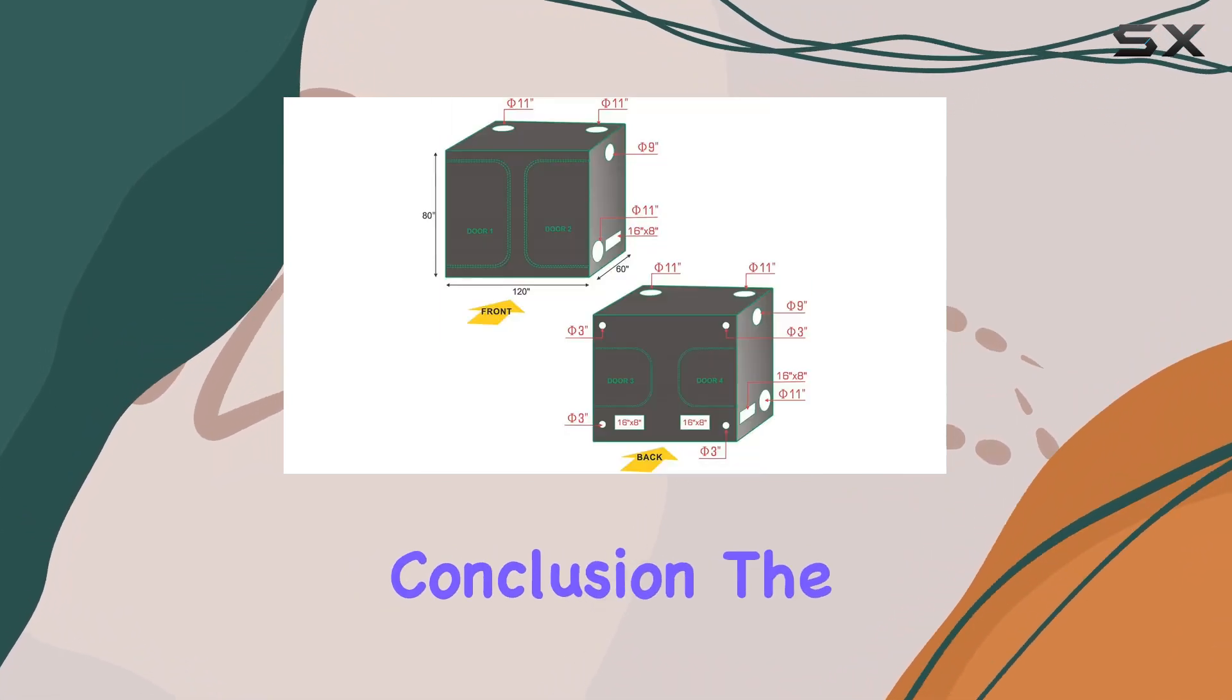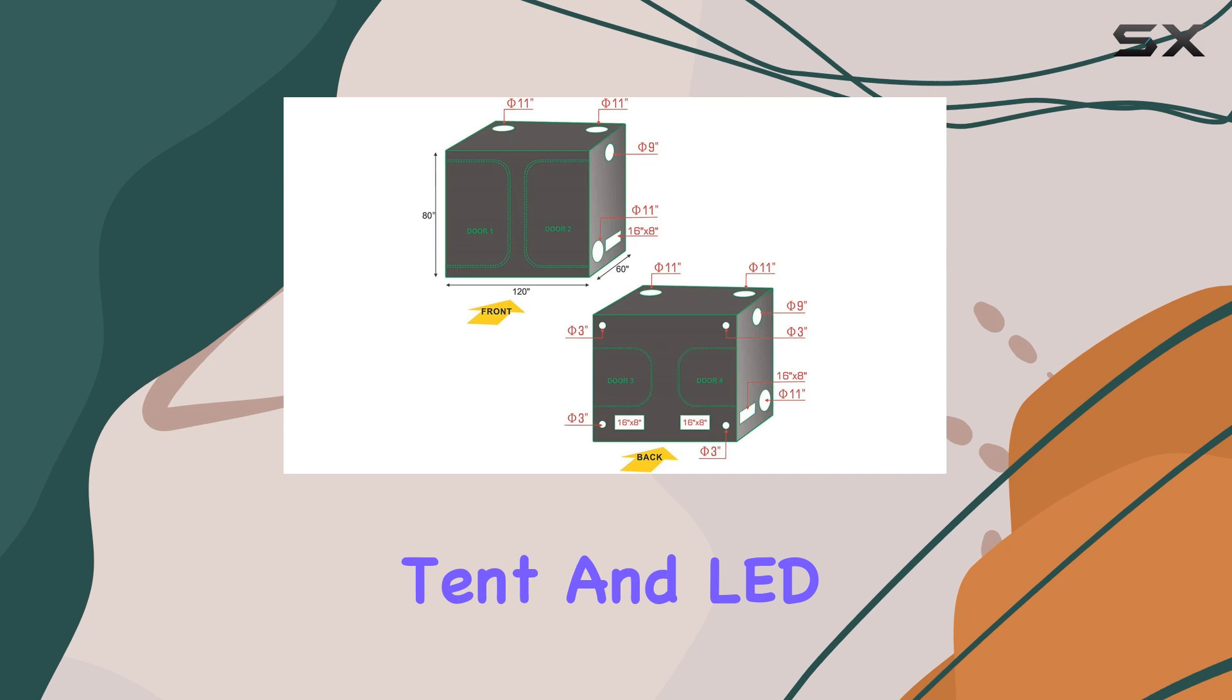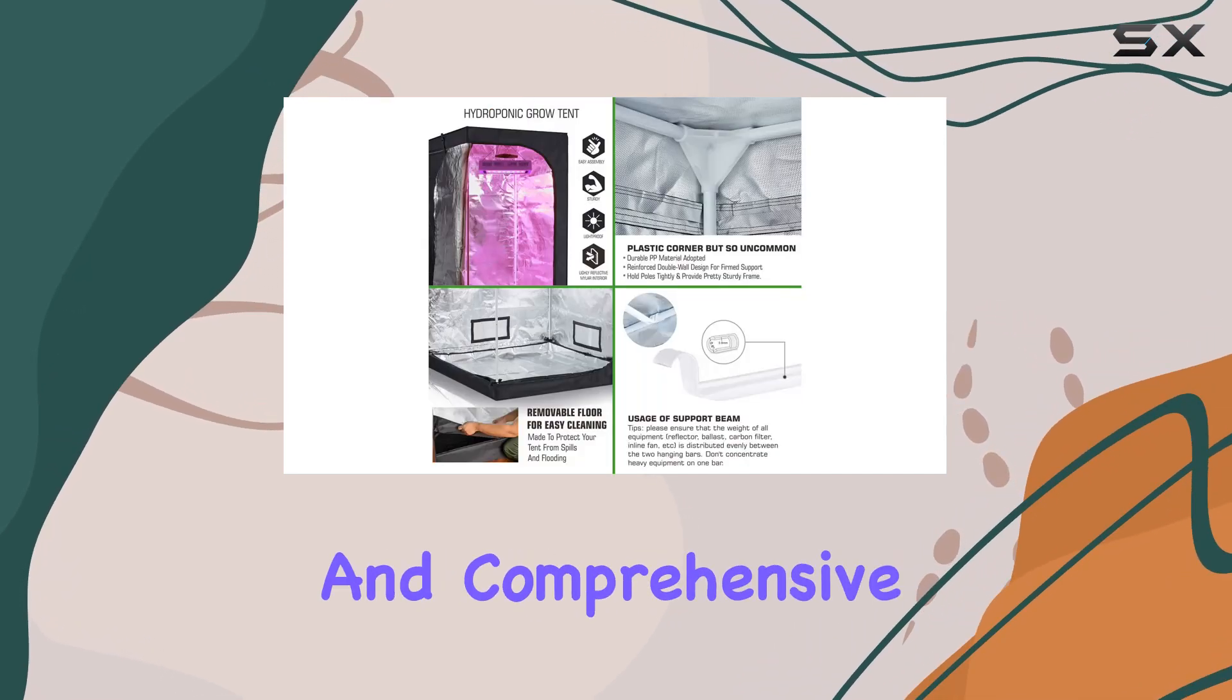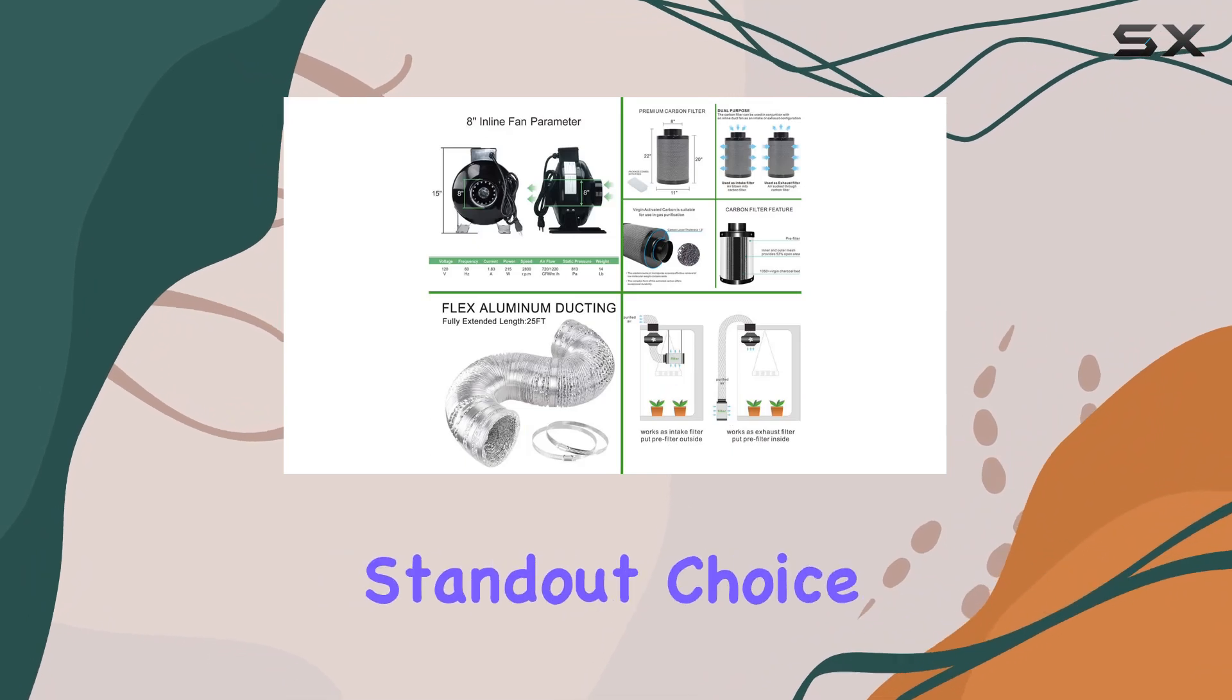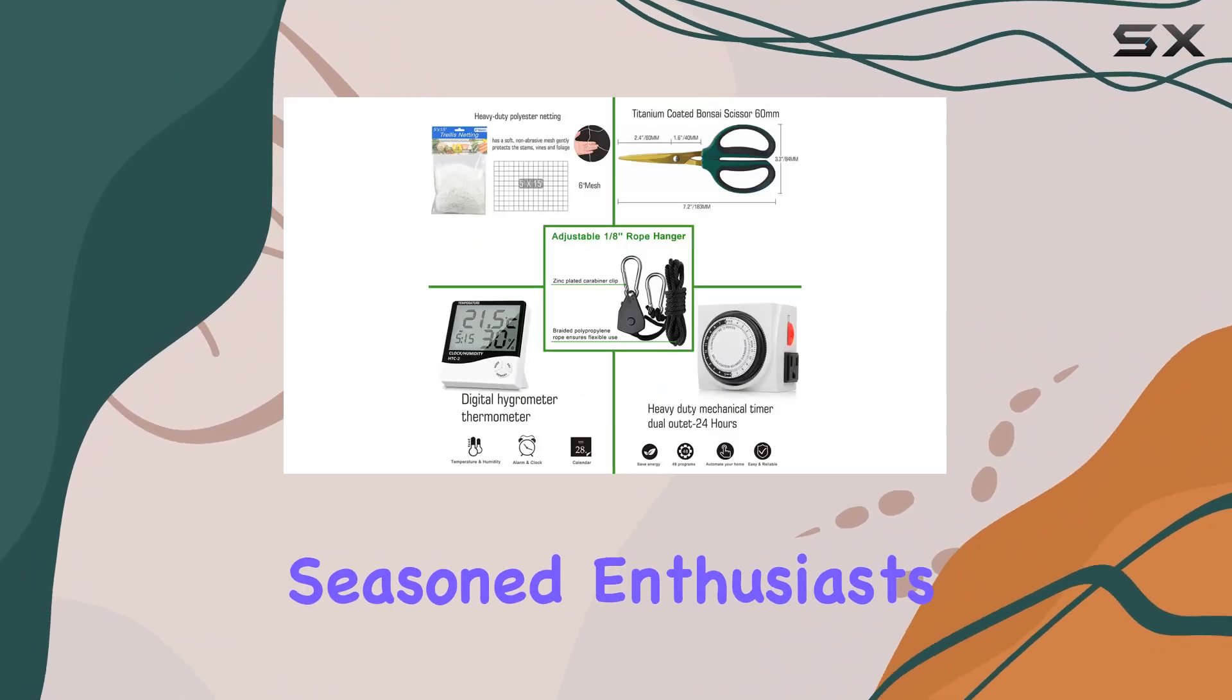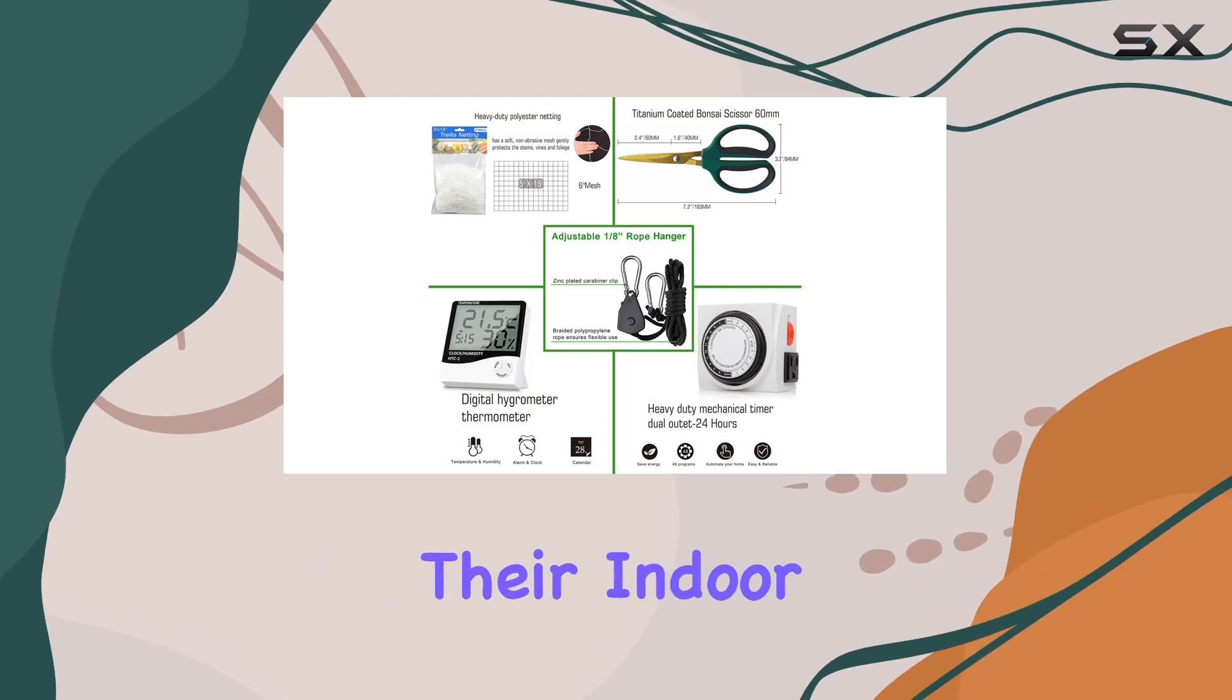In conclusion, the Alphapar Grow Tent and LED Grow Light Kit impresses with its thoughtful design, robust construction, and comprehensive accessories, making it a standout choice for both novice growers and seasoned enthusiasts looking to maximize their indoor gardening potential.